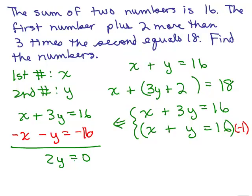Remember, that is something. 0 is a number, so when we divide by 2, I've got y equals 0. So it looks like the second number is 0. Now let's go back to one of the equations and figure out the other one. The top equation was x plus y equals 16, so if y is 0, x has got to be 16. So my numbers are 16 and 0.